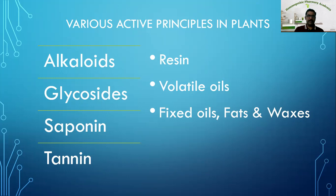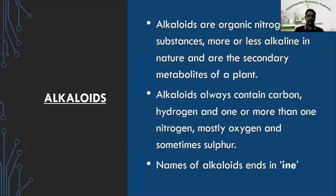First, we will see the alkaloids. Alkaloids are organic nitrogenous substances, more or less alkaline in nature, and are secondary metabolites of the plant. Alkaloids contain mostly nitrogen or nitrogen-containing compounds, and chemically are alkaline in nature — that is why they are known as alkaloids, meaning alkali-like. They are secondary metabolites derived from primary metabolites like carbohydrates, proteins, or lipids.